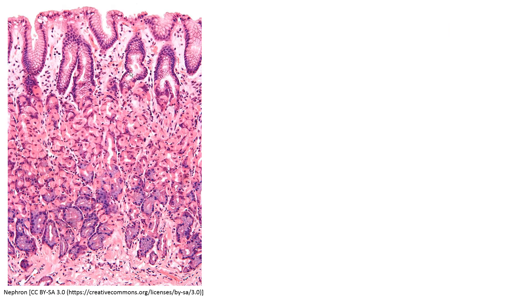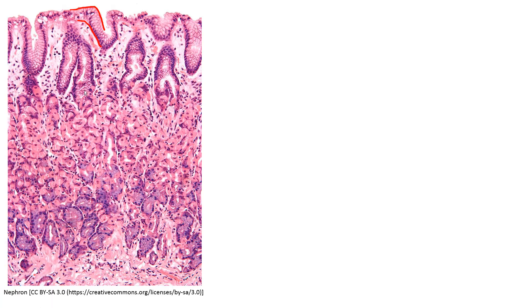In this higher-magnification image we can see the distinctive surface epithelial cells at the top, then mucus neck cells, and then very distinctly the parietal cells. Parietal cells are large, red, and tend to be fairly round and circular in shape. Further down we see the blue chief cells. If you get a good section at good magnification, it's not really hard to distinguish between parietal cells higher up in the gastric glands and chief cells lower down.